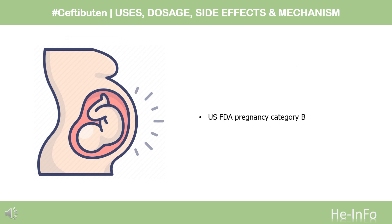Safety Advice. US FDA Pregnancy Category B. Animal reproduction studies have failed to demonstrate a risk to the fetus and there are no adequate and well-controlled studies in pregnant women. This drug should be used during pregnancy only if clearly needed.